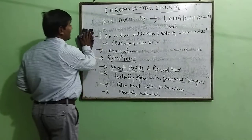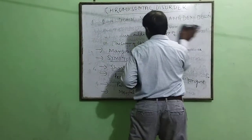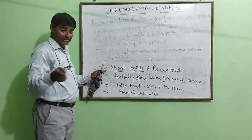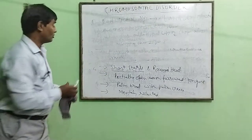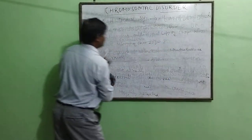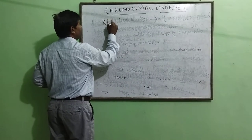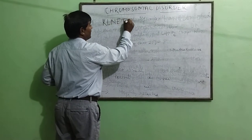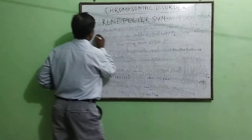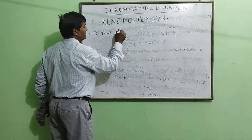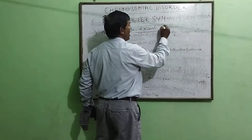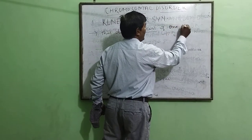Now we will come to another important chromosomal disorder, that is Klinefelter Syndrome. Everyone please note this down. In Down Syndrome there should be no doubt. Now we start Klinefelter Syndrome. This is due to the excess of one X chromosome.